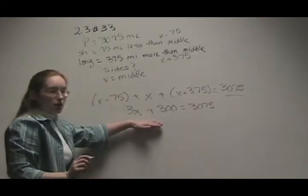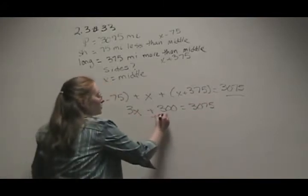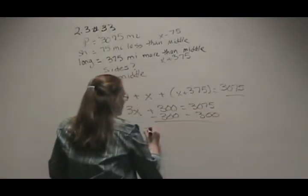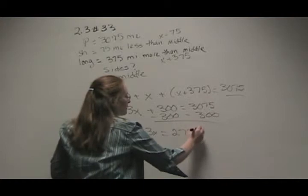Now, I want to get the x alone, so I'm going to move this 300, minus 300, minus 300. So 3x equals 2,775.